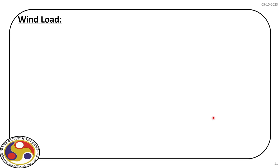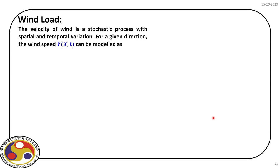The next load is wind load. Wind velocity is a stochastic process with location and time. If V is the wind speed modeled as V(x,t), it has two components: a time-varying component and a mean component V_0(x) which is the average velocity of wind at a particular place, plus a zero-mean transient process. We discuss this wind load model because for many structures we go for pseudo-static analysis without going into the details of dynamic analysis.